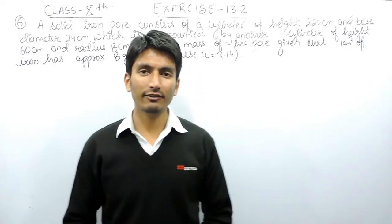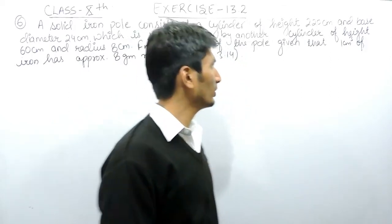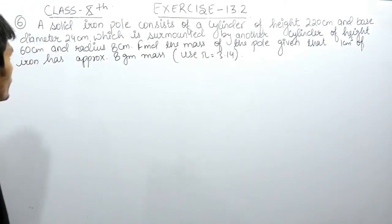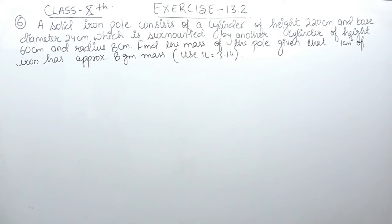Hello everyone, we are from True Maths and in this video we are going to solve question number 6 of exercise 13.2. The question says a solid iron pole consists of a cylinder of height 220 cm and base diameter 24 cm, which is surmounted by another cylinder of height 60 cm and radius 8 cm. You have to find the mass of the pole given that 1 cm cube of iron has approximately 8 gram mass.